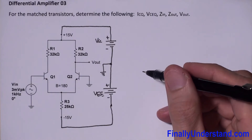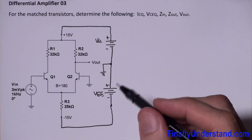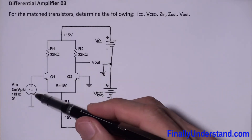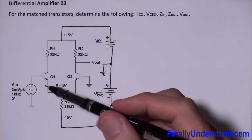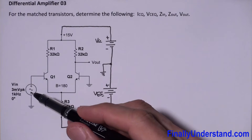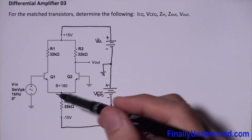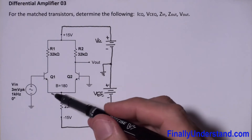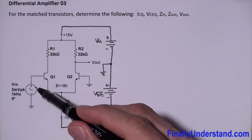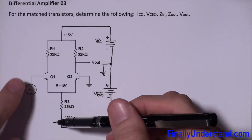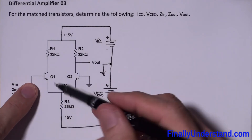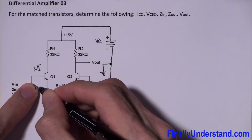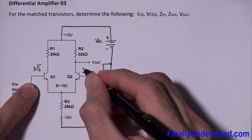This is VCC and this is VEE. First, we're supposed to do the DC analysis. When we do the DC analysis, we assume that the input signal sources are grounded — in other words, we assume that the input signal is equal to zero.